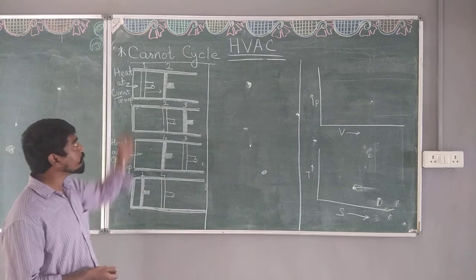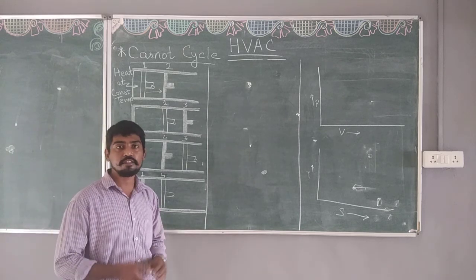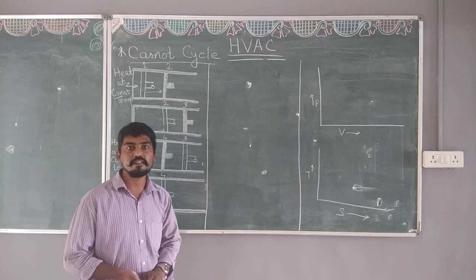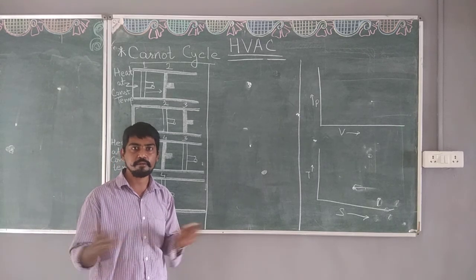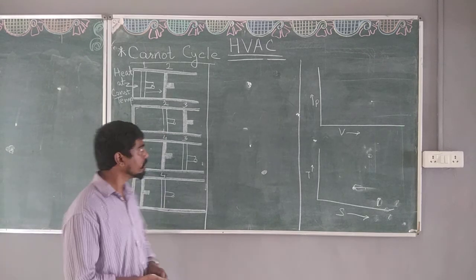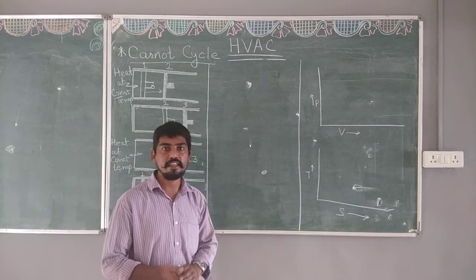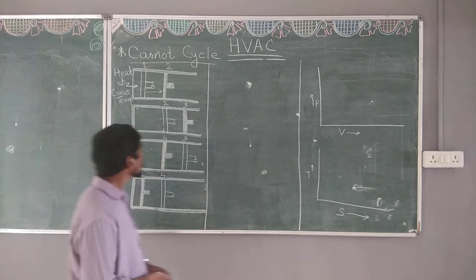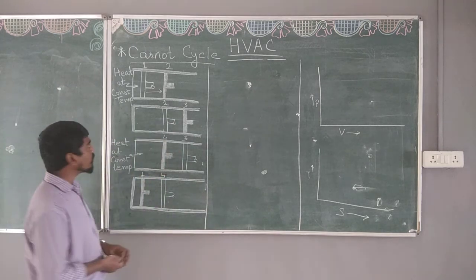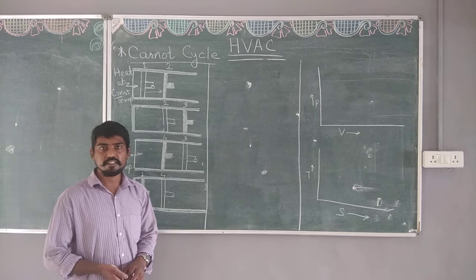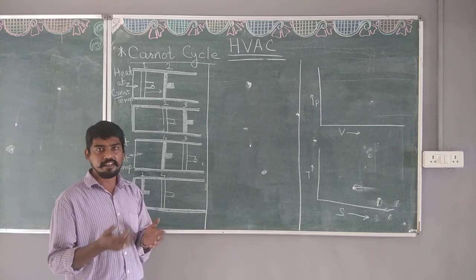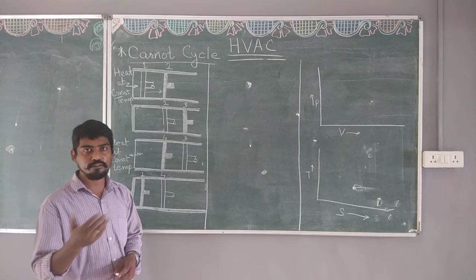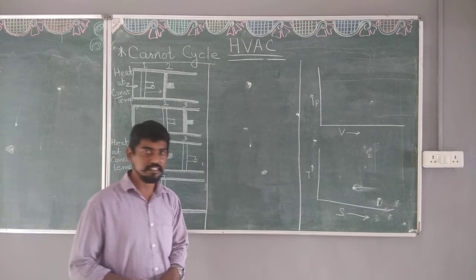The Carnot cycle consists of 4 reversible processes. They are reversible because it gives the maximum efficiency in terms of the output. These 4 reversible processes are: 2 reversible adiabatic processes and 2 reversible isothermal processes.